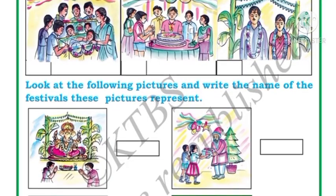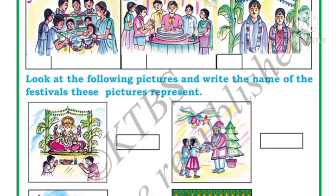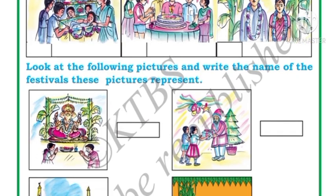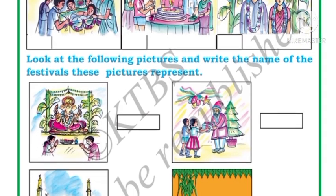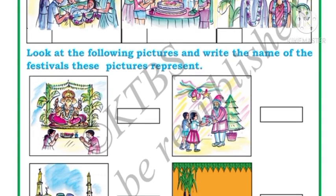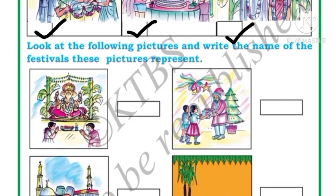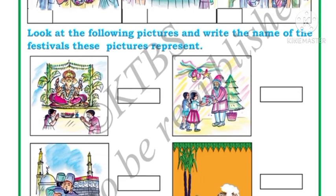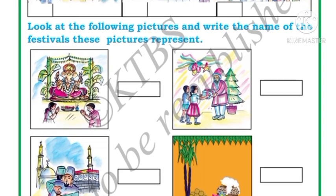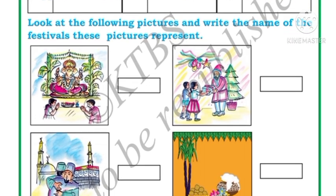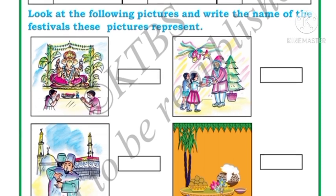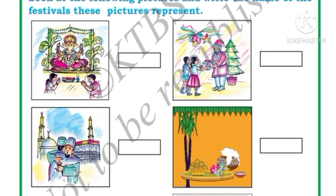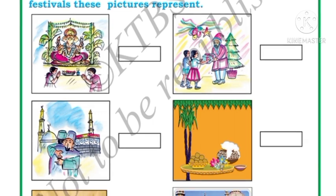Next, look at the following pictures and put a tick mark if you have participated in these celebrations. Here, naming ceremony, birthday celebration, and marriage celebration are given — put a tick mark if you have participated in each. I hope you all have participated in all the celebrations, so you can put a tick mark for every picture.